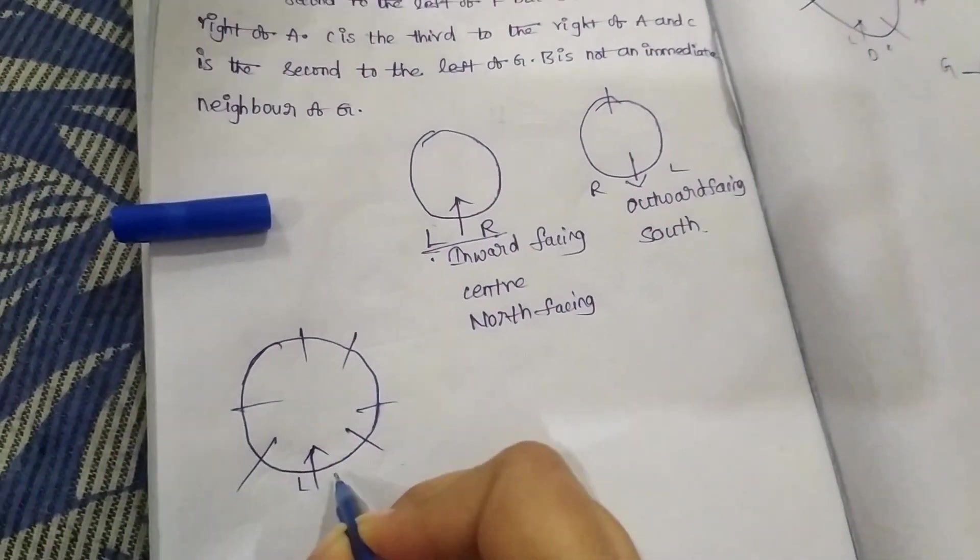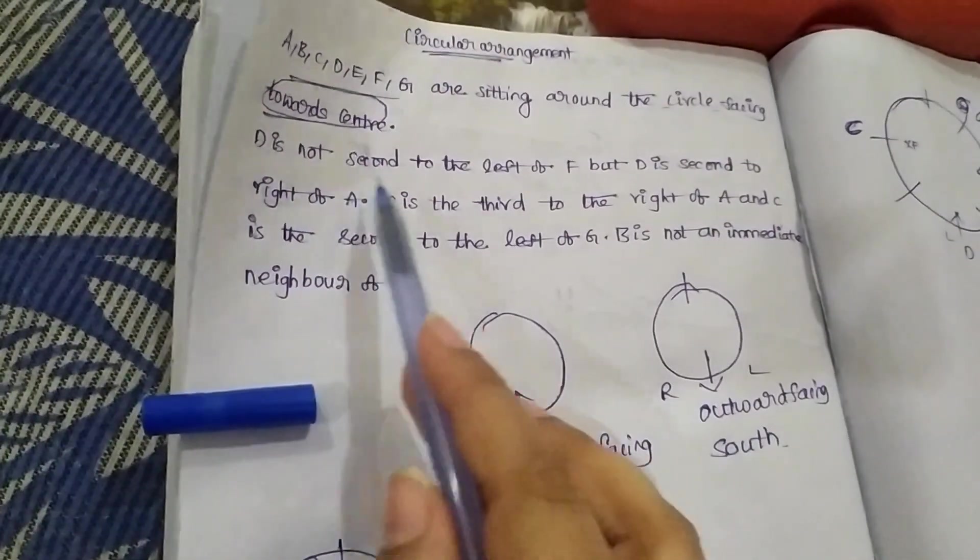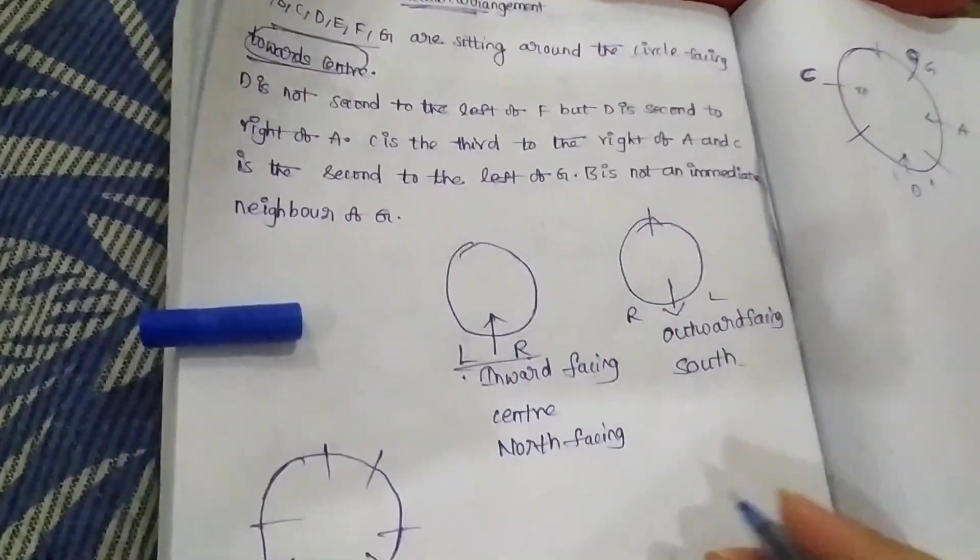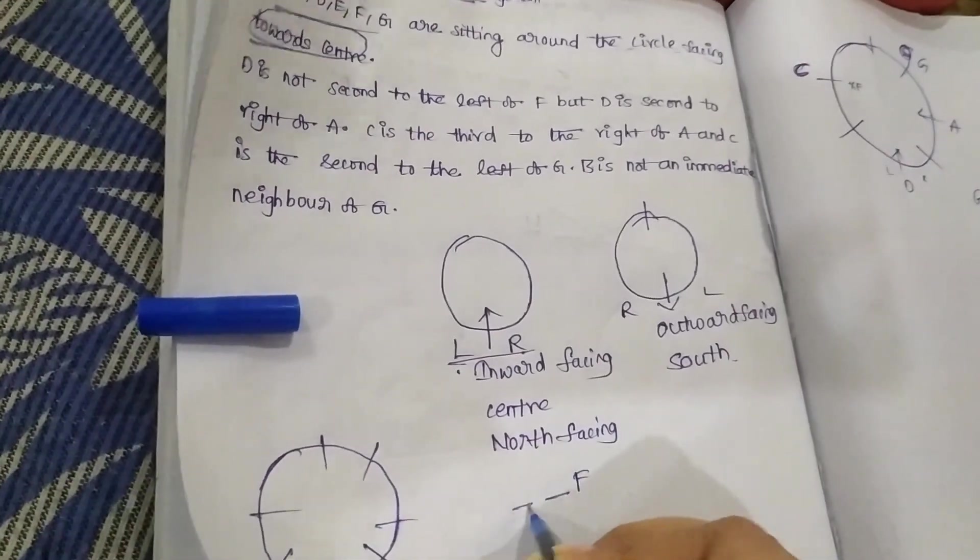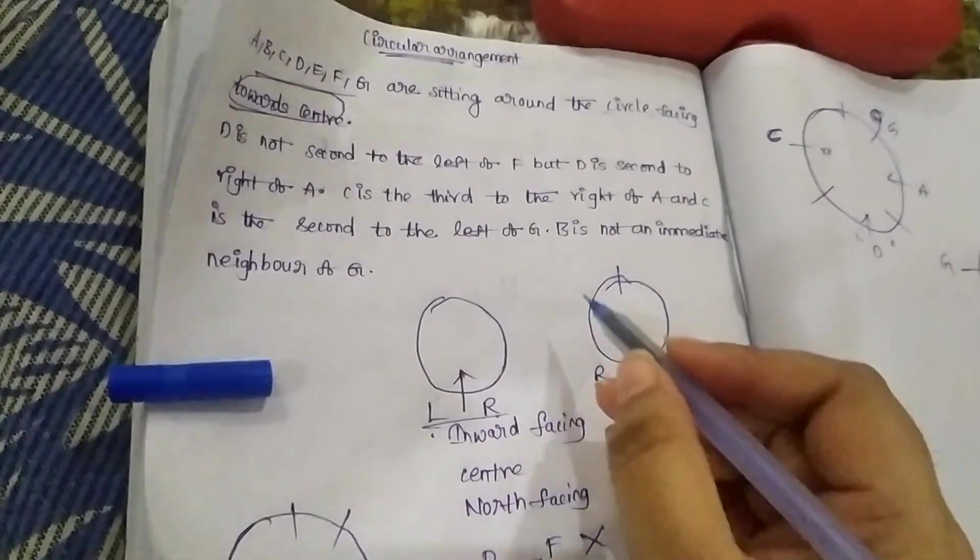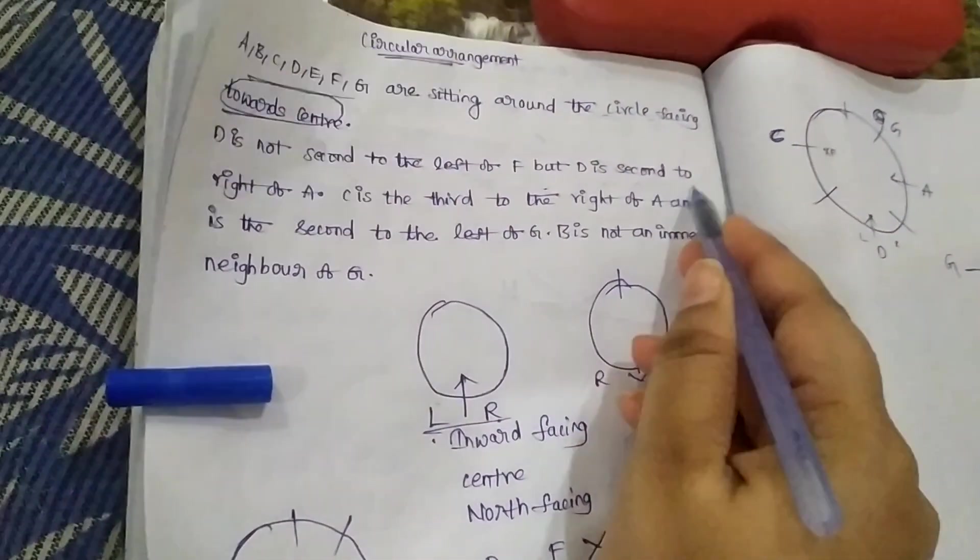A, B, C, D, E, F, G. D is not second to the left of F. F is second left. D is not second left.